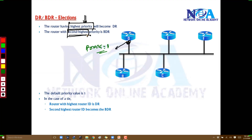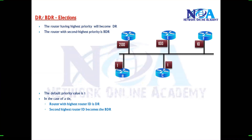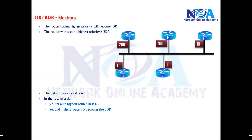In this example topology, assume these are the configured priority values. 200 is the highest, so router D will become the DR, and the next highest is 100, so that will become the BDR.